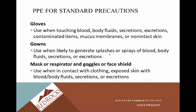For PPE — personal protective equipment — under standard precautions, you use gloves when touching blood, bodily fluids, secretions, excretions, contaminated items such as linen, mucous membranes, or non-intact skin. Basically anything that can transmit illness. You use gowns when you're likely to generate splashes or sprays of blood, bodily fluids, secretions, or excretions — anything that would get on your uniform without a barrier.